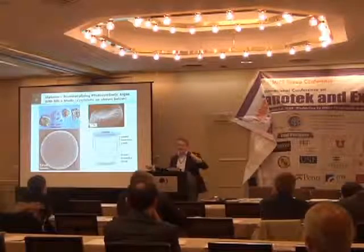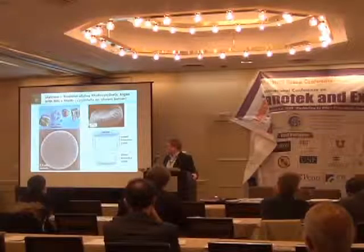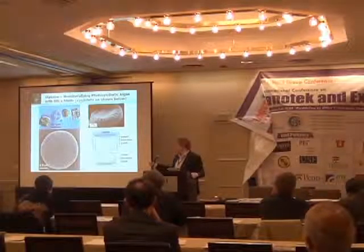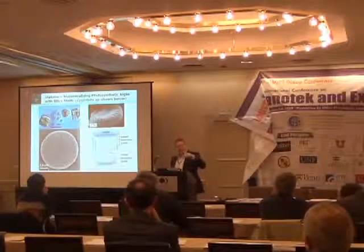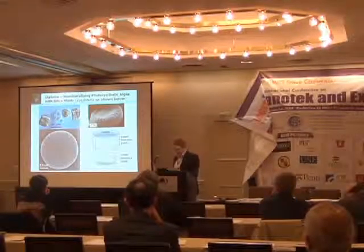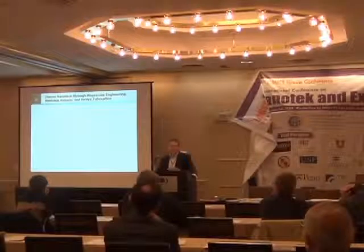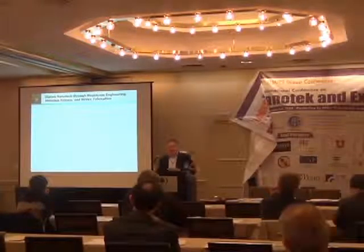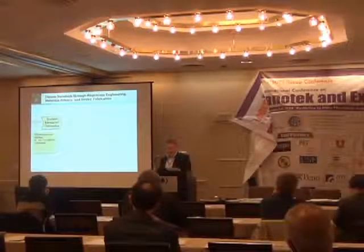In addition to the ellipsoidal organism, they also have centric-shaped organisms with radial symmetry. One feature all these organisms possess is that they actually have two shells — an upper shell and a lower shell — with all cellular material contained within them. Over the past 10 years in my laboratory, we've been exploiting these organisms for nanotechnology applications through a three- or four-step process involving bioprocess engineering, material science, and device fabrication.